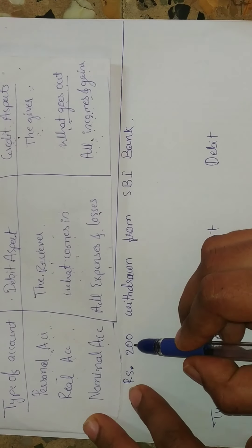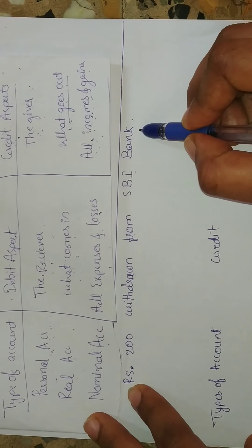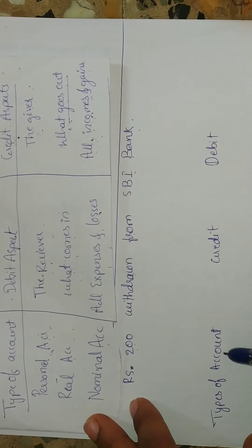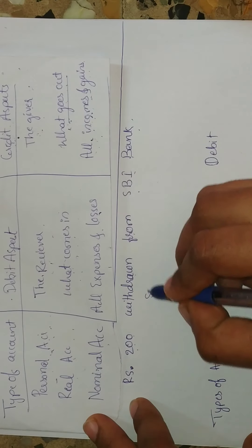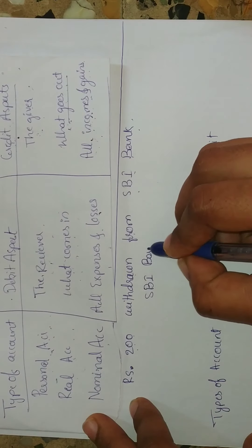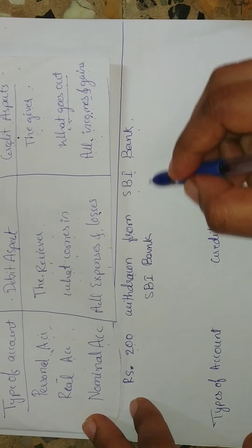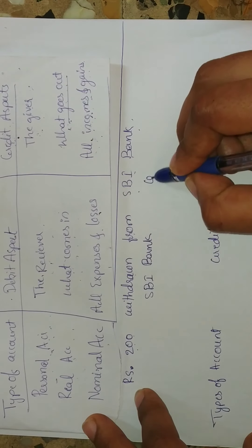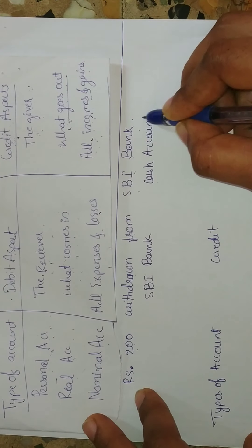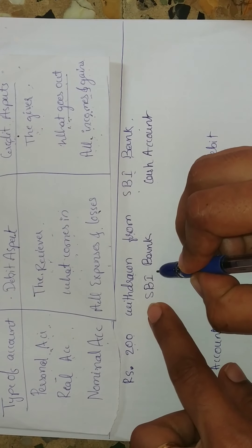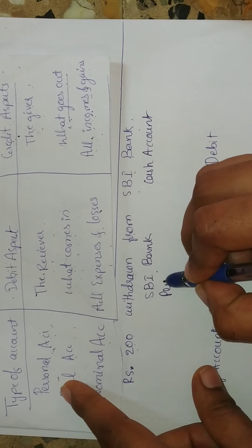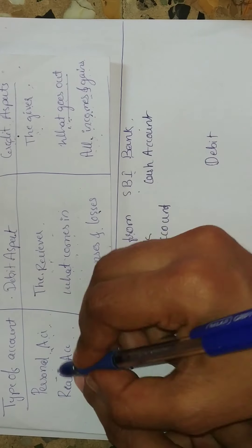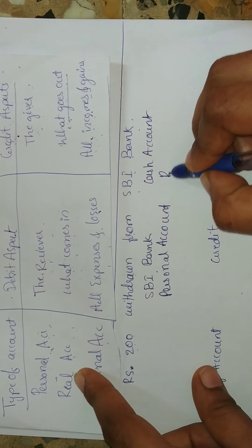The second transaction: rupees 200 withdrawn from SPI Bank. We are going to withdraw 200 rupees from SPI Bank. The two accounts affected are SPI Bank and cash account. Bank names always come under personal account, so SPI Bank comes under personal account. Cash account always comes under real account.